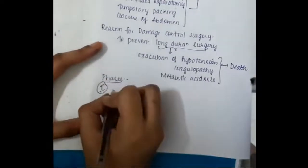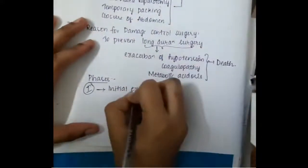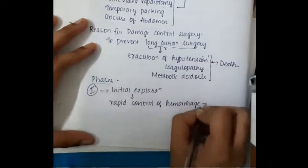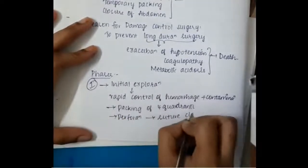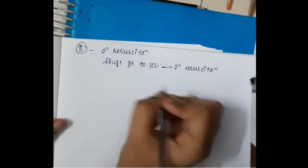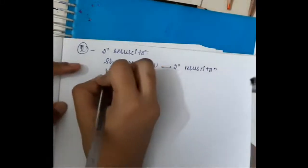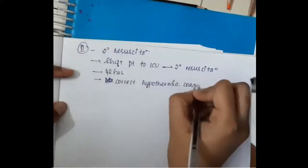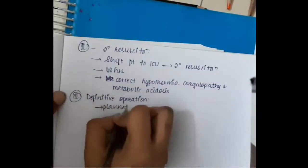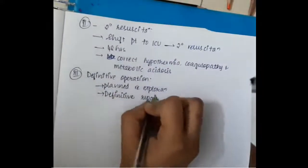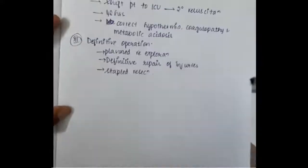The phases of damage controlled surgery include: Phase 1 — initial exploration, where we rapidly control hemorrhage and contamination, perform packing of all four quadrants, and close any perforations. Phase 2 — secondary resuscitation, where the abdomen is closed, the patient is shifted to the ICU, and resuscitation is done for approximately 48 hours to correct hypothermia, coagulopathy, and metabolic acidosis. Phase 3 — definitive operation, where planned re-exploration is done and the injury is definitively repaired with stapled resection.